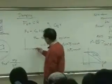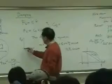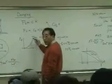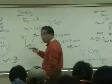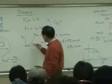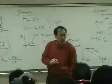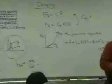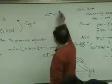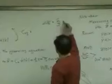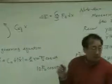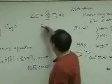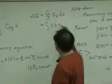The damping force in this case looks like this. But if the velocity is small, then I can approximate it like this — that is C_eq. How can I find the equivalent damping? In many ways. But the very common way is the following: the energy dissipated during one cycle because of damping would be the integral of F_d dx. And for the linear damping case, this is C times x-dot dx.